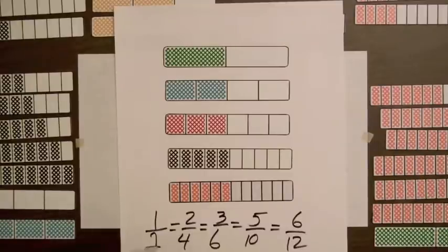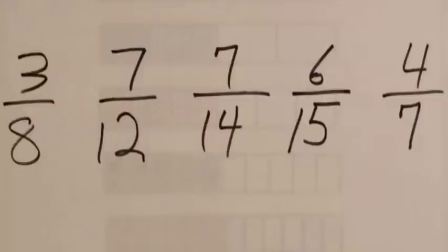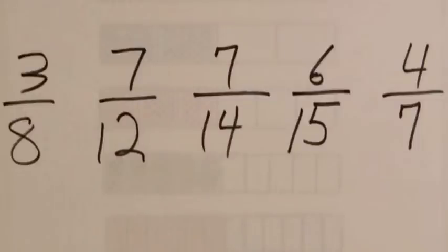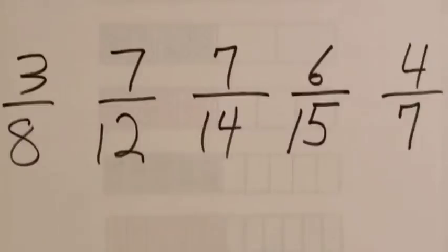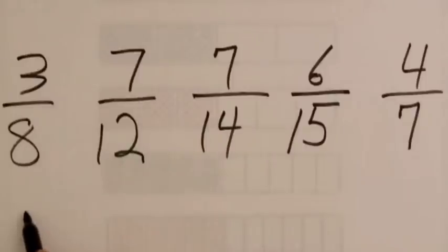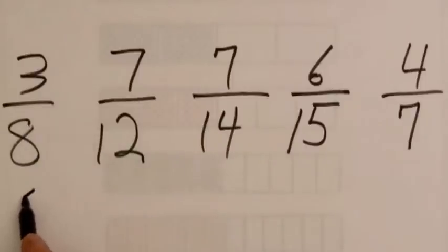Let's look at a list of fractions, and think about this test for fractions that are equal to a half. Now for three eighths, the bar would have eight parts, and three parts would be shaded. The bar for this fraction is less than half shaded, and this fraction is less than half.